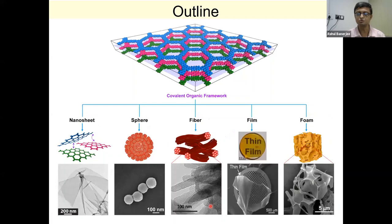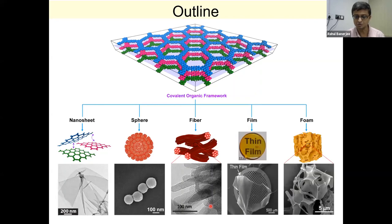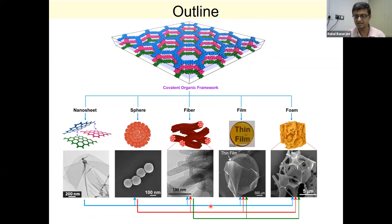Looking at it carefully, we do have a similar material with us — the covalent organic framework, the 2D layered structures. These 2D layer structures could similarly be converted into different morphologies, just like graphene oxide. We have an opportunity to tune these 2D crystalline and porous materials into diverse morphologies. Not only that, we could also interconnect them and try to use these pathways to create even better materials for industrial applications.